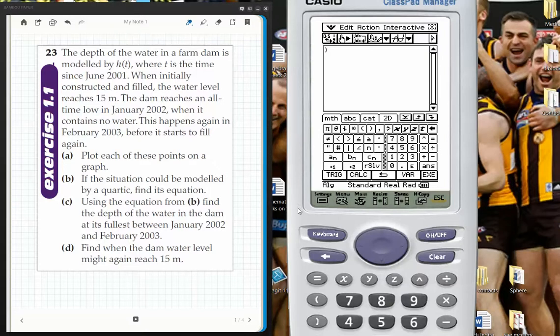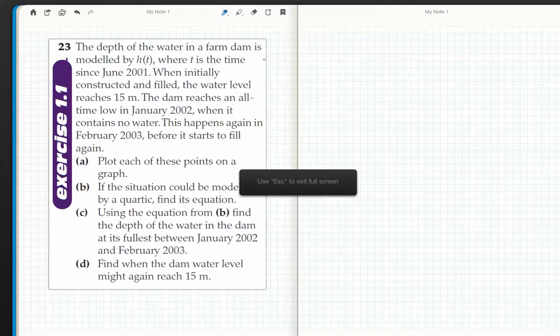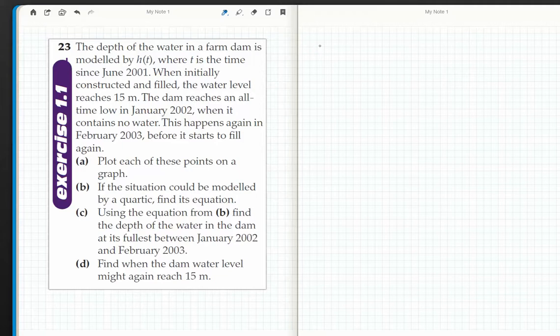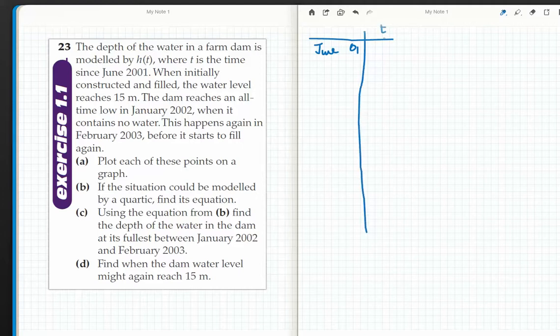Okay, so I need to work out what my T's are. June 2001 is T equals zero, and at that particular point it was 15 meters deep. The dam reaches an all-time low in January 2002. T is in time, so T must be months.